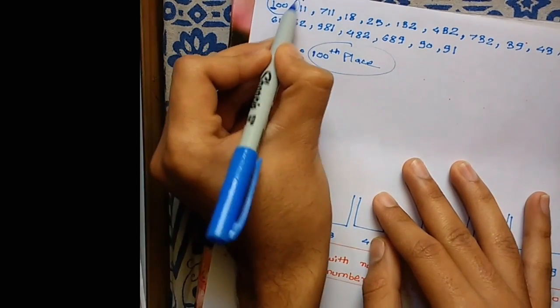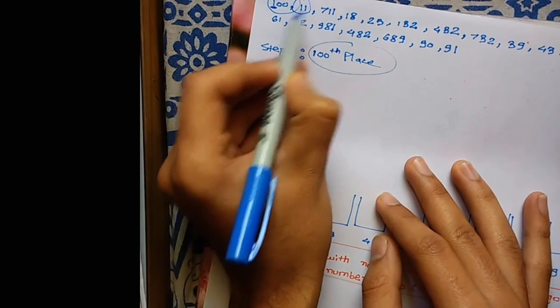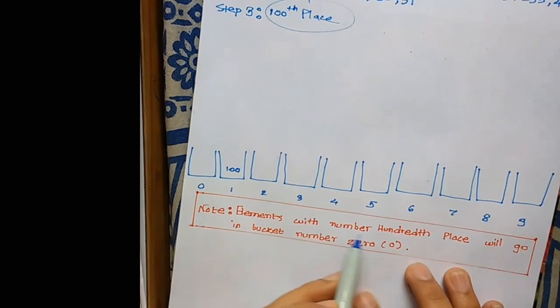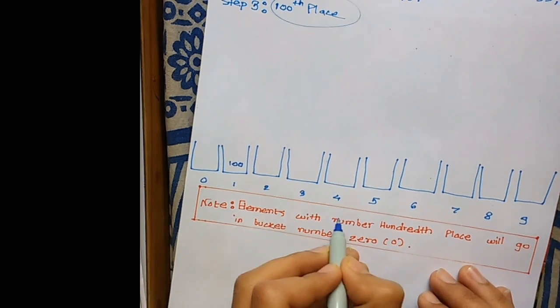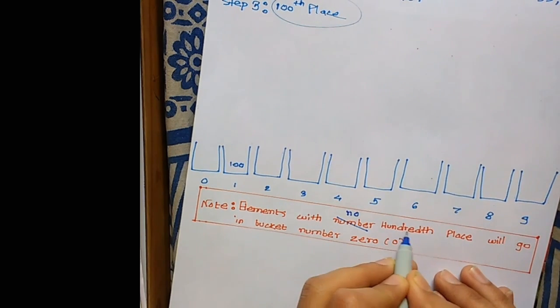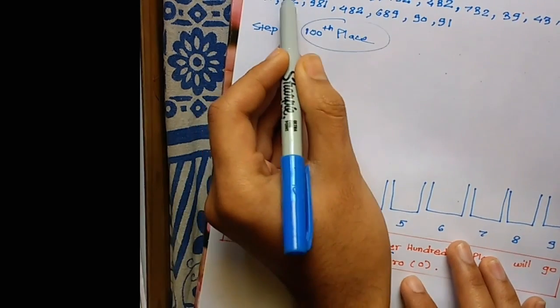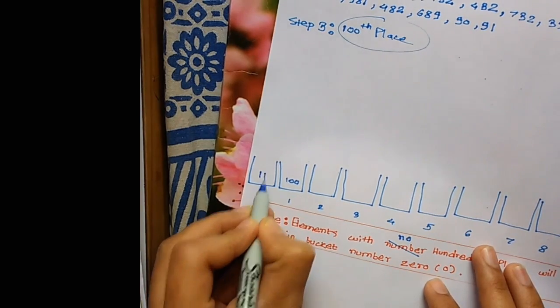In 11, you'll observe there is no 100th place. The note says elements with no 100th place will go in bucket 0. That means elements without any 100th place go in bucket 0. So 11 goes in bucket 0.